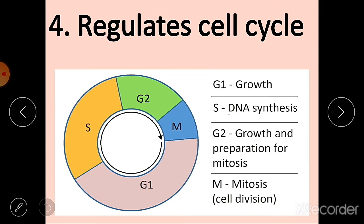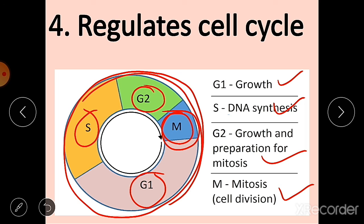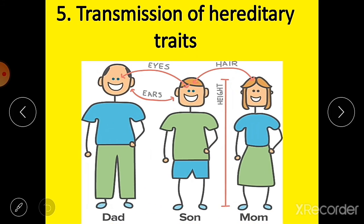Fourth, the nucleus regulates the cell cycle — from the G1 phase (growth), to S phase (DNA synthesis), to G2 phase (growth and preparation for mitosis), to M phase (mitosis/cell division). All these processes from the origin of the cell to its maturity and division are controlled and regulated by the nucleus.